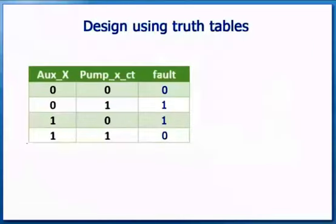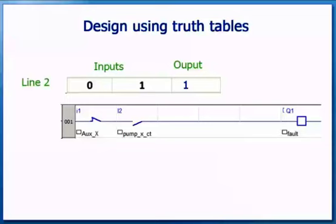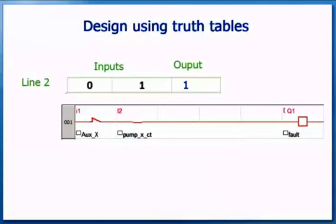With this method we can use the truth table to design our program. Focus on the conditions when the output is on — there are two that are true. For line 2: fault is on if auxiliary X is not on AND PUMPXCT is on. Using a normally closed auxiliary X and normally open PUMPXCT, this line will be true. This only works for the condition when auxiliary X is off and PUMPXCT is on.